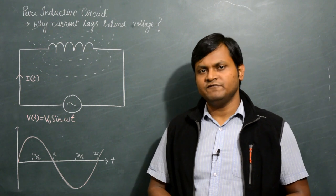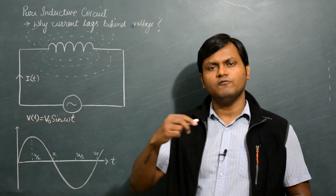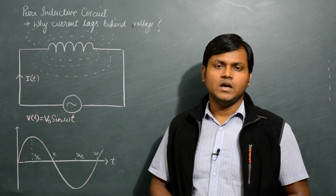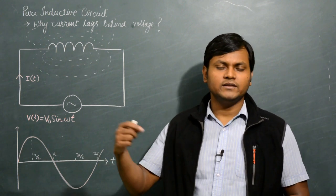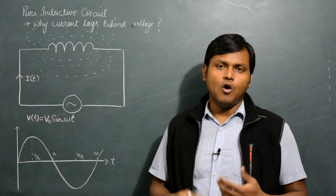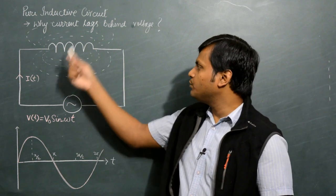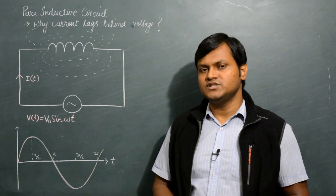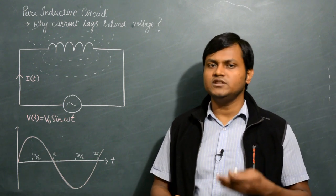An inductor in its most basic form is simply a coil of wire wounded around some kind of core material. Whenever a current is flowing through this coil of wire, it leads to the generation of magnetic flux around this particular inductor. The nature of this magnetic flux is such that it opposes the change in the flow of current.